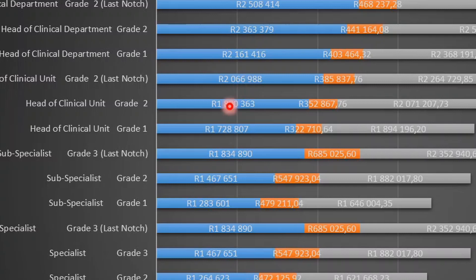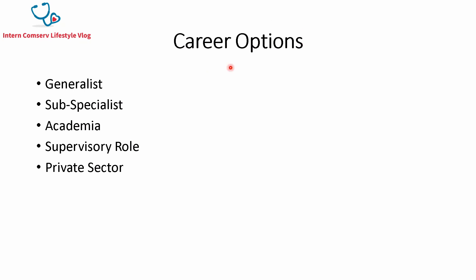Another advantage of becoming a head of clinical unit is that you can reach that position much more quickly than waiting to reach specialist grade three. Now that we've looked at the salaries, as a specialist you can decide which areas to pursue. Options include: continuing as a generalist specialist, subspecializing, joining academia and a university teaching program, taking up a supervisory role as head of clinical unit or head of clinical department, or going into the private sector or immigrating.